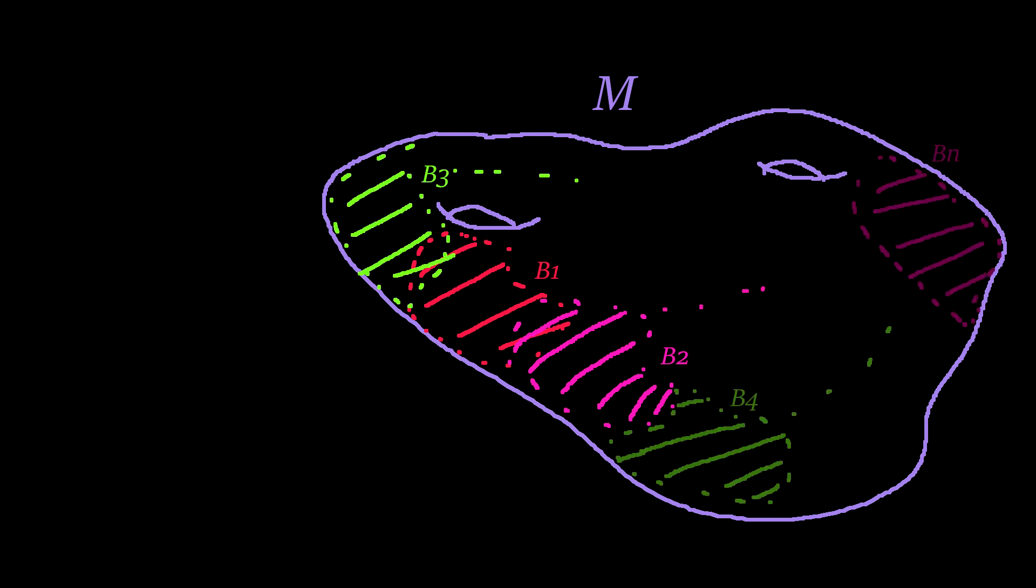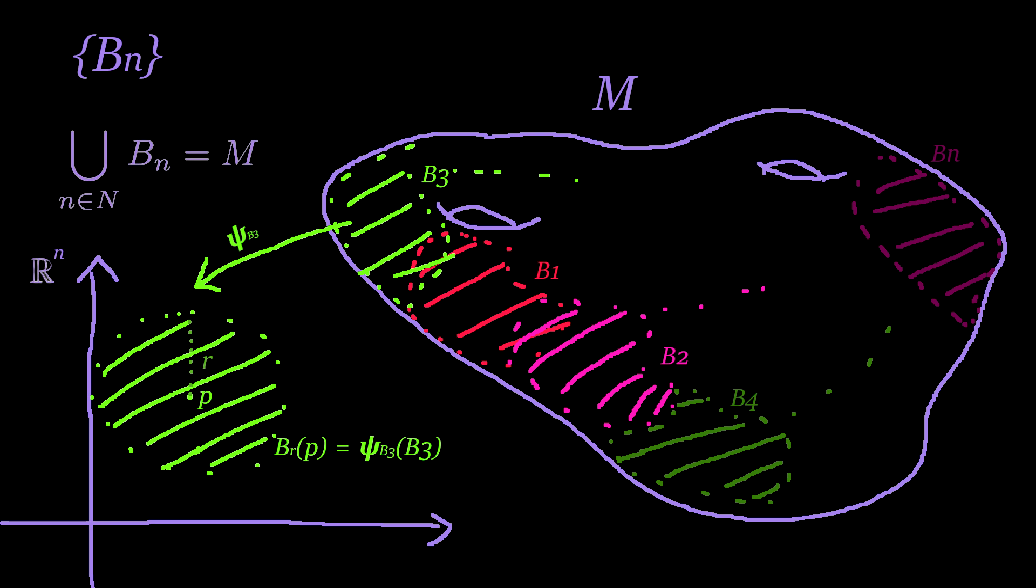Since it is a topological manifold, it will have a countable basis of precompact coordinate balls. By coordinate ball we mean a coordinate domain whose image under the respective chart is a ball in R^n. We will call our set of coordinate balls B in Fracture font.